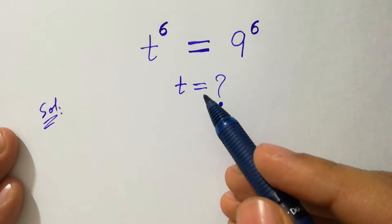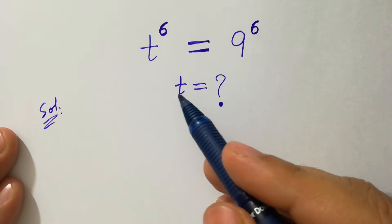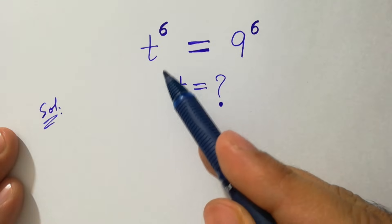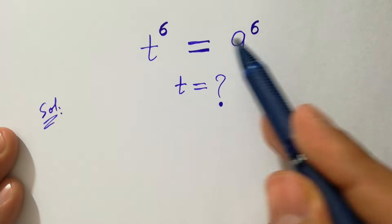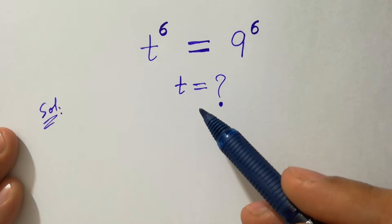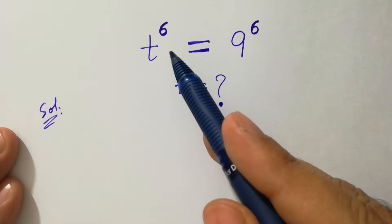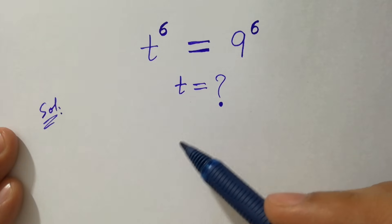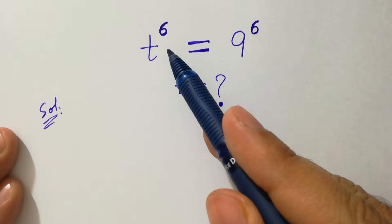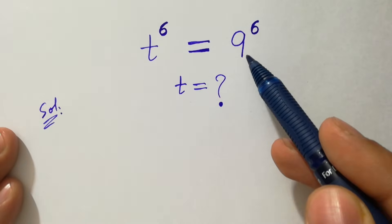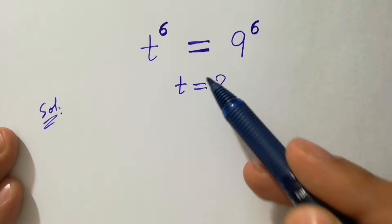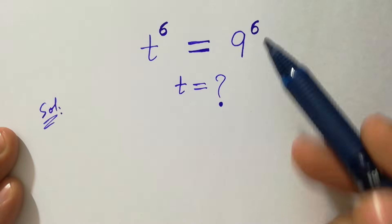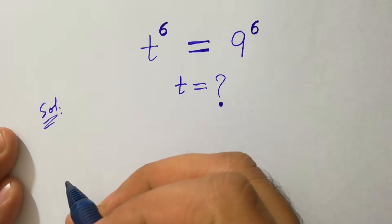This problem is a 6th degree equation — it has the highest power of 6. Remember that a 6th degree equation always gives 6 different solutions. Let's start.